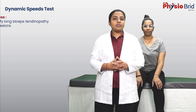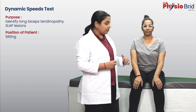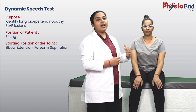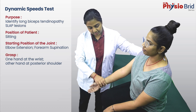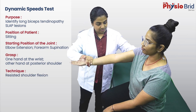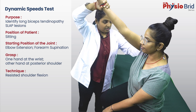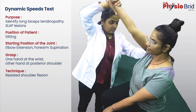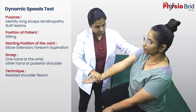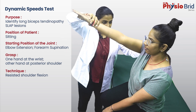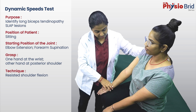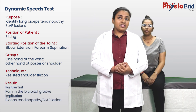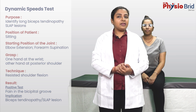In a variation, often called the Dynamic Speed Test, resistance is applied throughout the range of forward flexion at the shoulder, with the forearm in complete supination and elbow in extension. Once again, the test is considered positive with the potential pain responses.